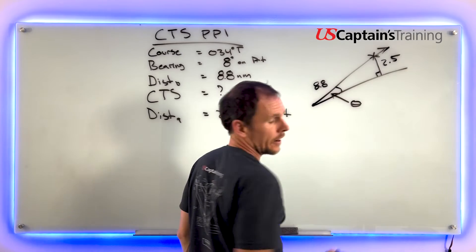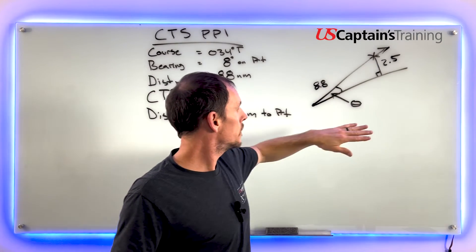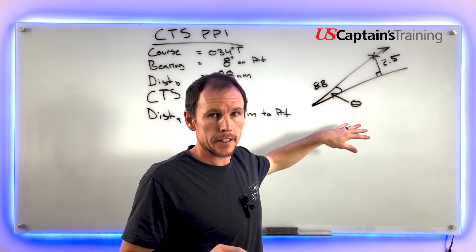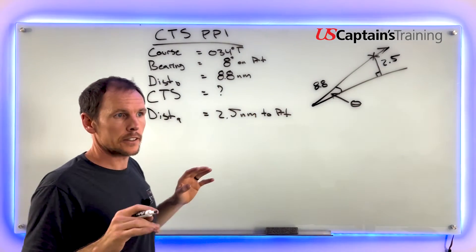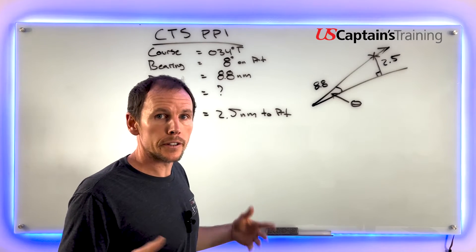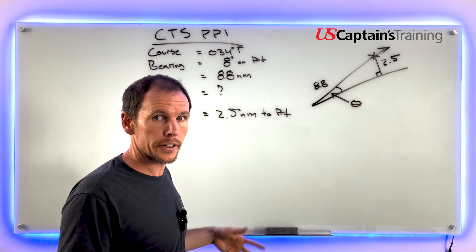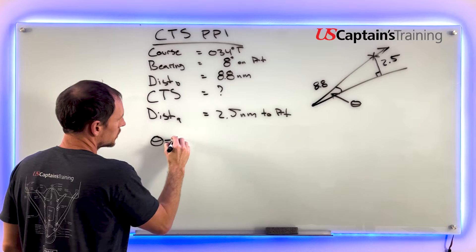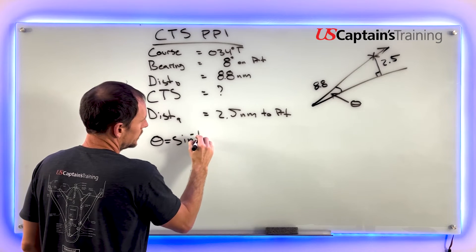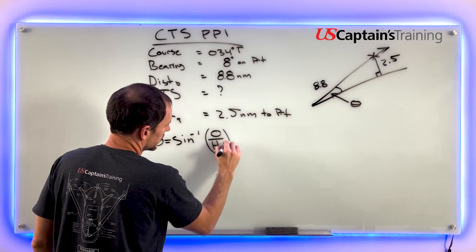We're going to call it theta. The formula we use - your calculator does all the work for you, so all you need to do is find the buttons. We say theta equals sine inverse times the opposite divided by the hypotenuse.